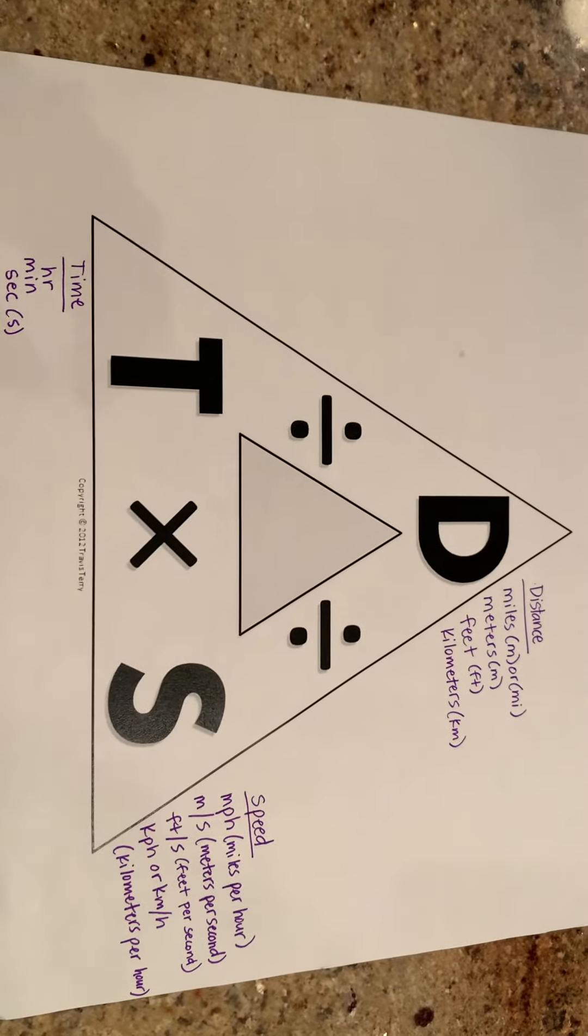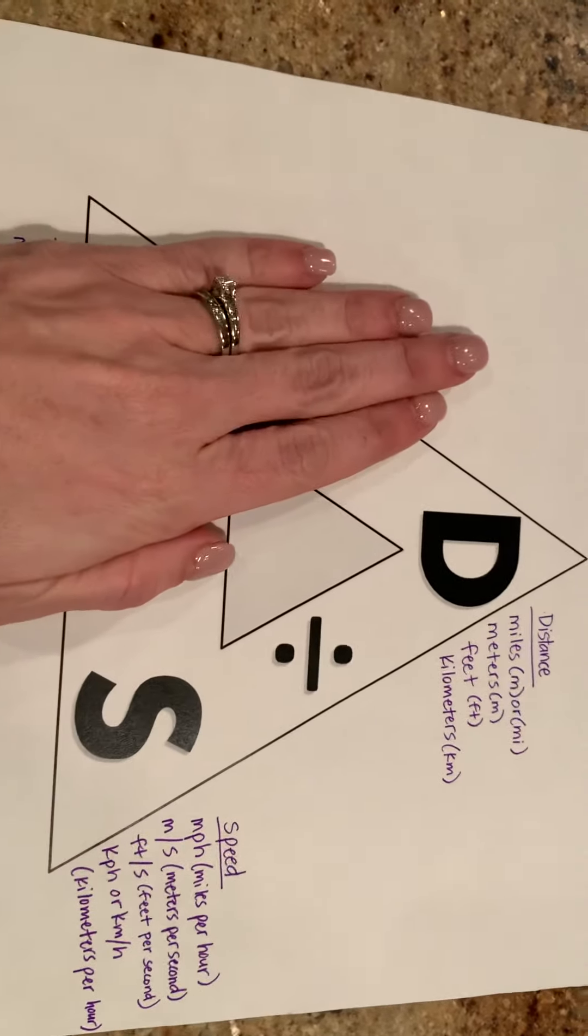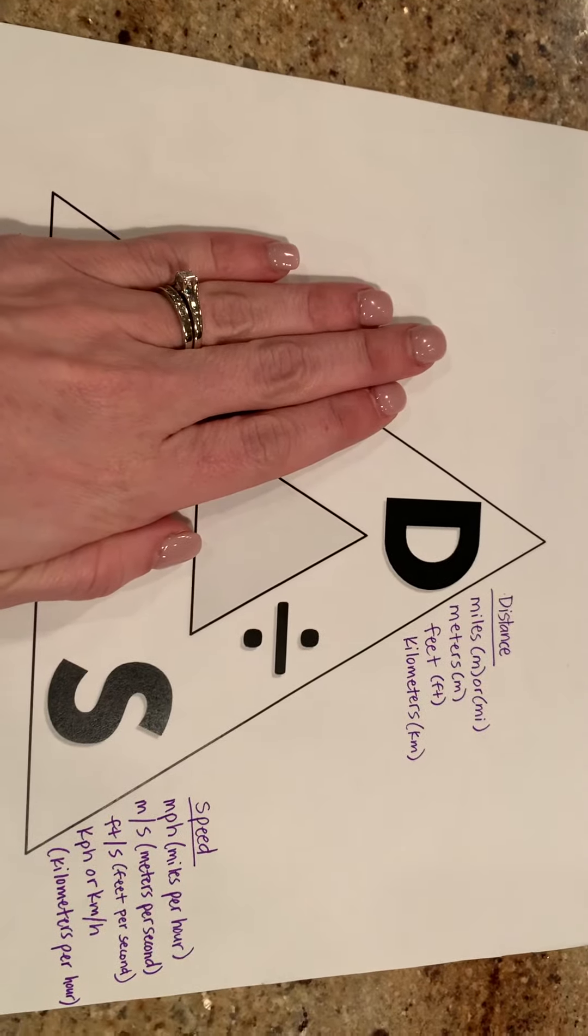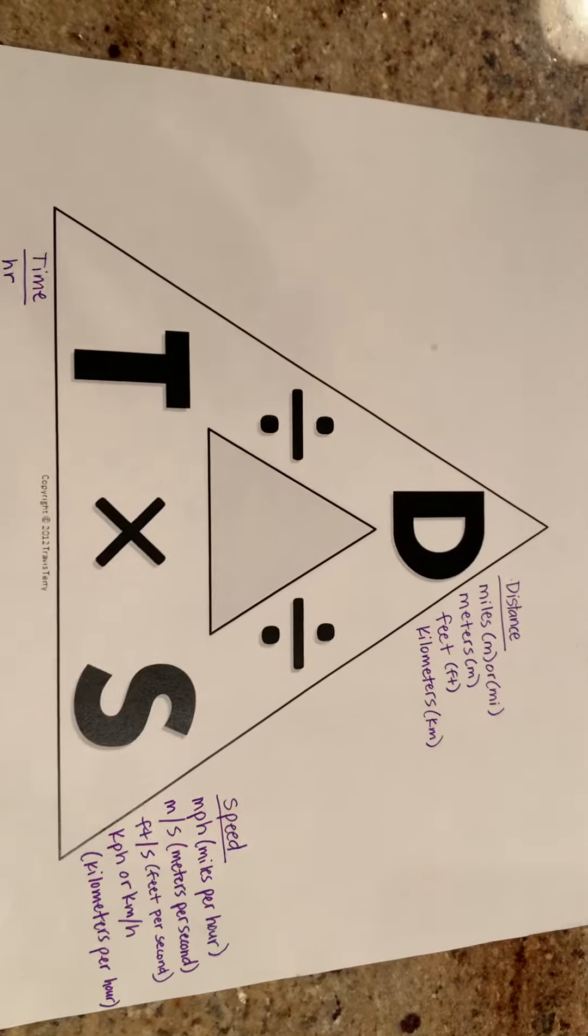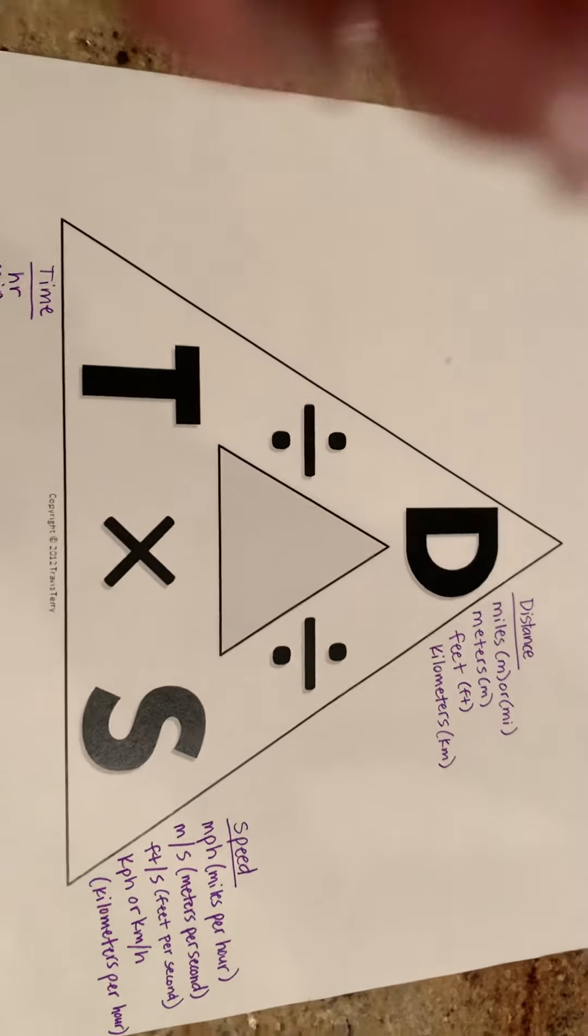If the problem asks for a time, then we cover up time, and then our equation is our distance divided by the speed. So all you have to do is cover up whatever it is you're looking for, and that'll give you the equation.